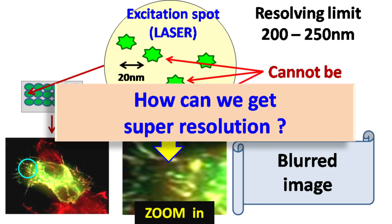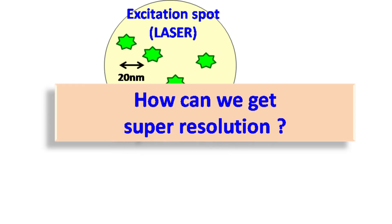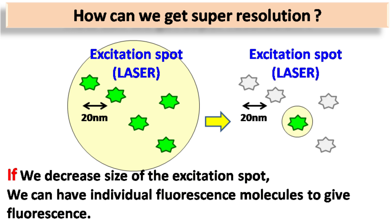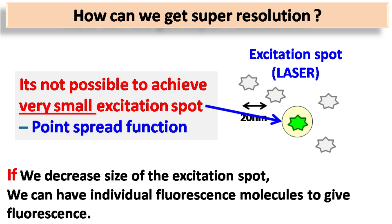So the question is: how can we achieve super resolution? The idea of getting super resolution is simple — if we can decrease the excitation spot of the laser, then we can have individual fluorescent molecules give fluorescence. However, according to the laws of physics, it is practically impossible to have such a small excitation spot.